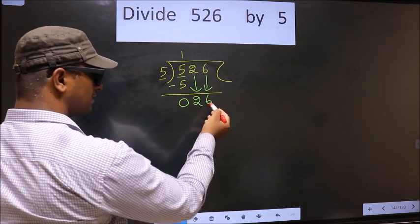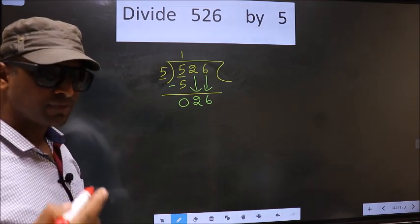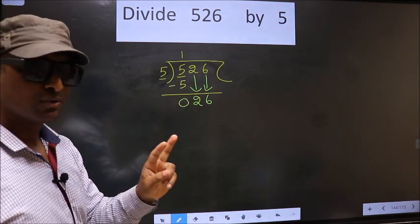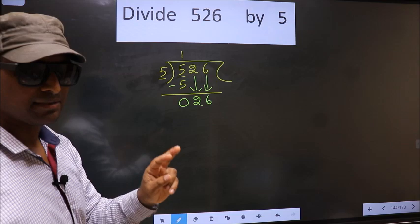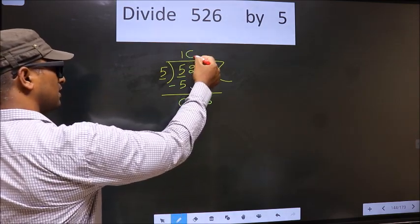Here you should remember this point. Whenever you are bringing down 2 numbers at the same time, you must put 0 in the quotient.